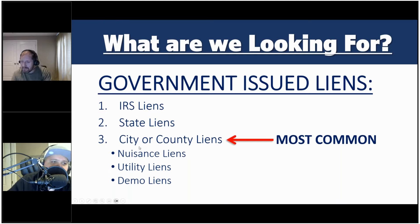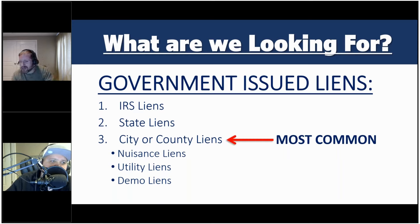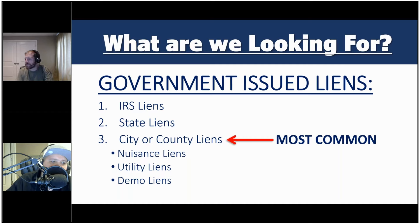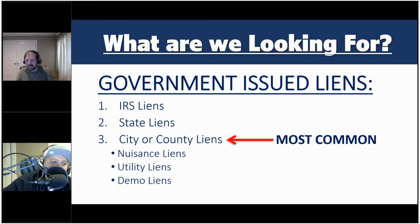By far the most common liens we come across are issued against a property because it's a mess — because they have to cut the grass, because there's junk laying there, or because the building no longer meets code. If a property is deemed unsafe and condemned, that's a legal process where the property is declared an unsafe structure before they go through the process to tear it down. Another type is a demolition lien. If you see liens for large amounts — twelve, fifteen, twenty thousand dollars — a lot of times you're looking at a buildup of multiple years of taxes combined with something like a demolition lien.